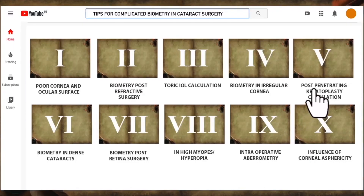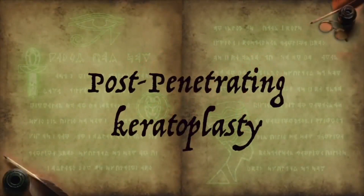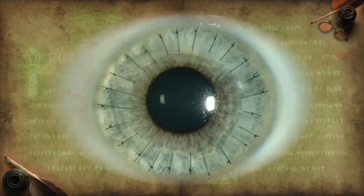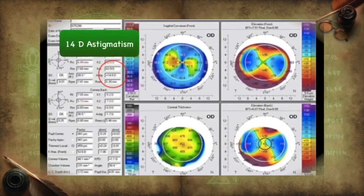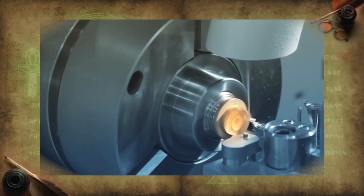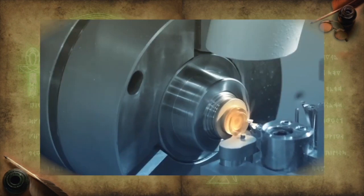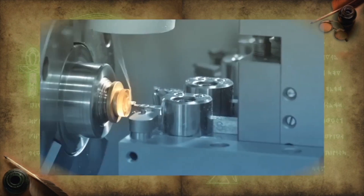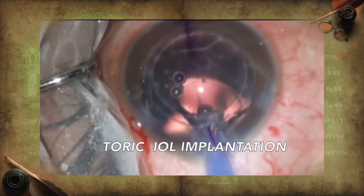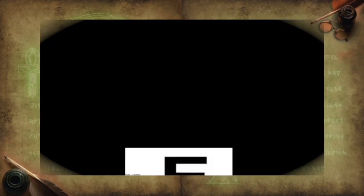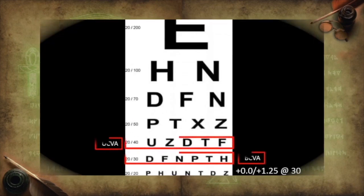The next scenario is post-penetrating keratoplasty. Usually such cases lead to a high amount of astigmatism. These cases need to be treated with customization of toric IOLs, and it is seen that these give good visual outcomes.